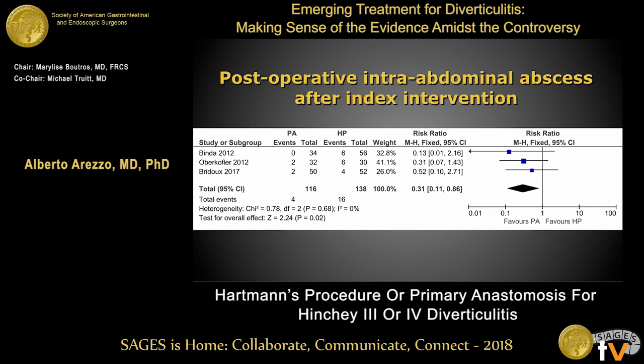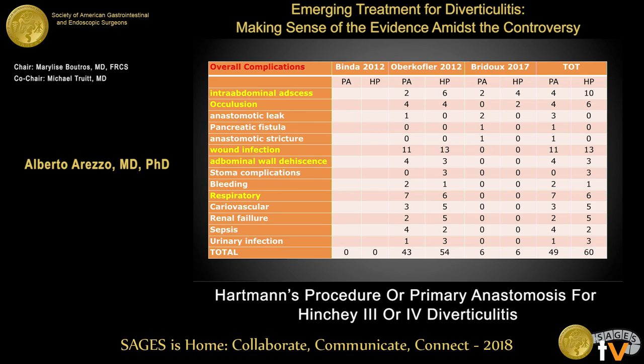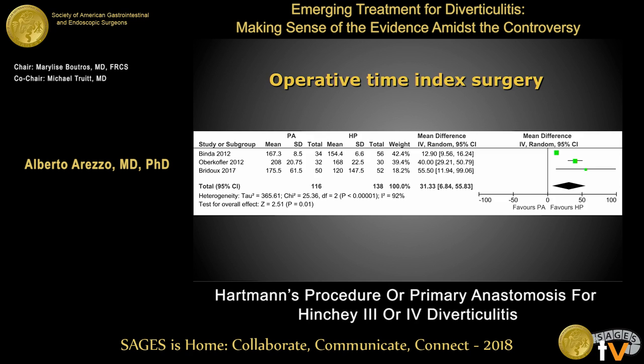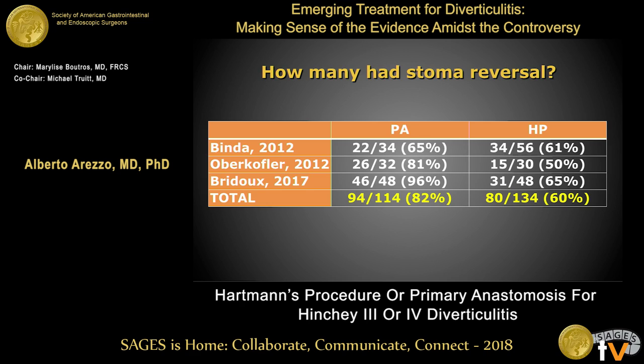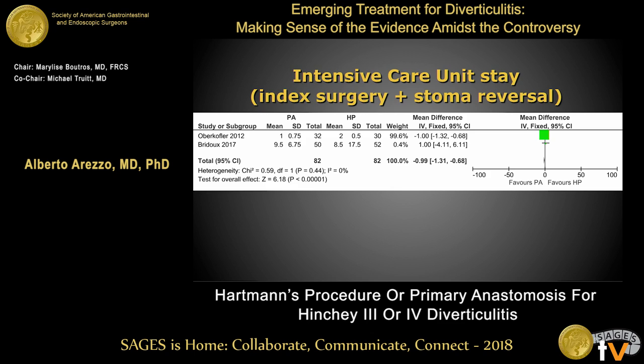The overall complications mainly entail intra-abdominal abscesses, occlusion, wound infection, abdominal wall dehiscence, and respiratory complications. Operative time at index surgery was not surprisingly in favor of Hartmann procedure by about 30 minutes, but this was completely reversed when including the stoma reversal procedure. No difference was shown in intensive care unit stay or hospital stay, with exact equivalence between the two groups.